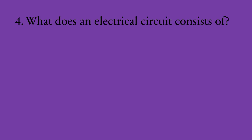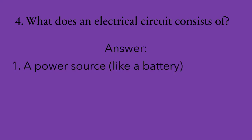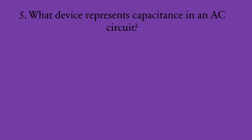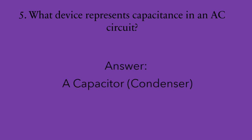Number four: what does an electrical circuit consist of? An electrical circuit actually consists of three components. One, a power source, like a battery. Two, a conductor, like your wires. And three, a load or resistance, such as a light bulb or heater. Number five: what device represents the capacitance in an AC circuit? The answer is a capacitor, also known as a condenser.